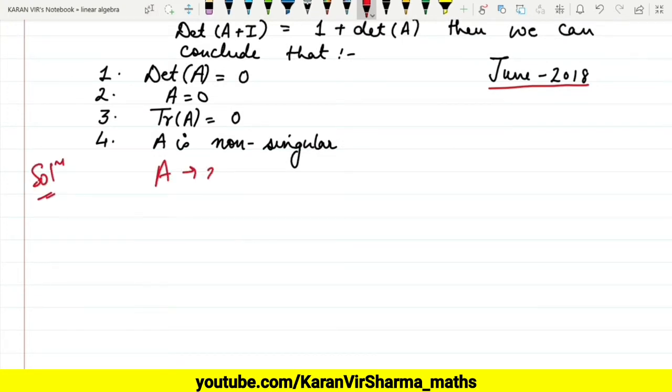We are given A is a 2×2 matrix, so let's consider A as a general matrix with elements [a, b; c, d]. So A+I will be [a+I, b; c, d+I].